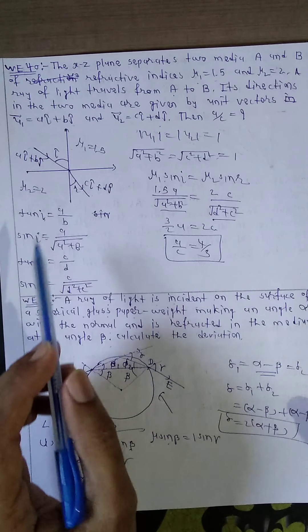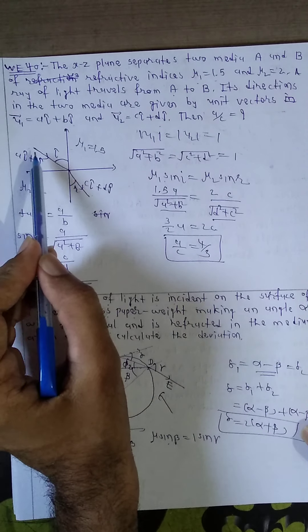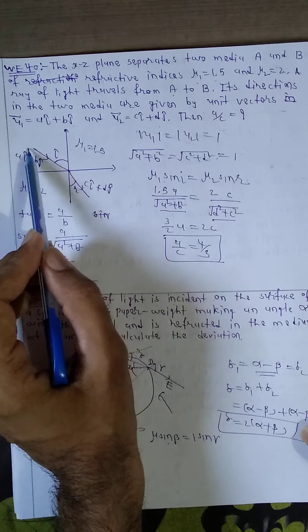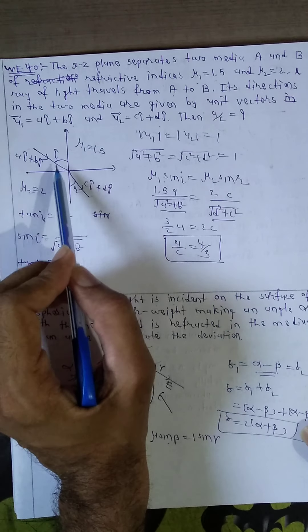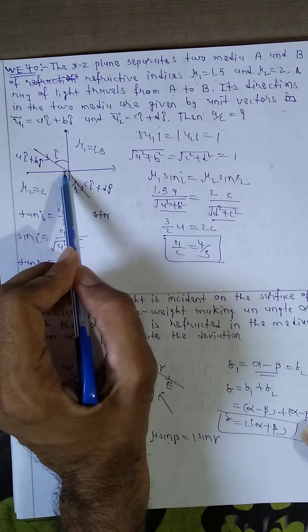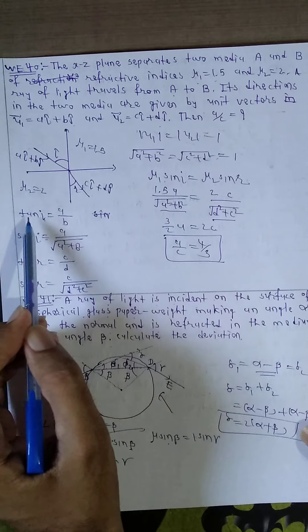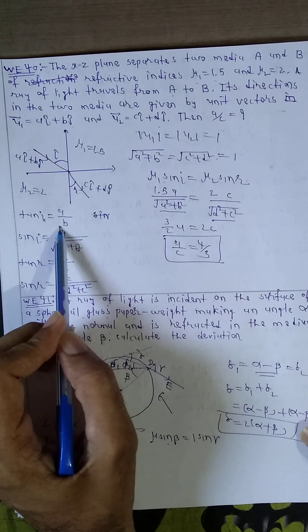Now here, in this case tan i, opposite side a upon near side b, then tan i equal to a upon b.